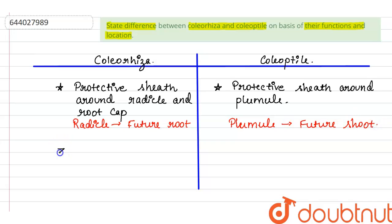This is the function, protective function. Next is location. This covers root, that is the radicle part of the plant. And coleoptyle covers plumule. This is the location.